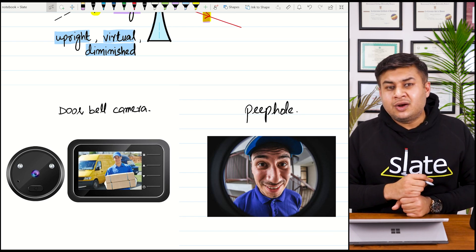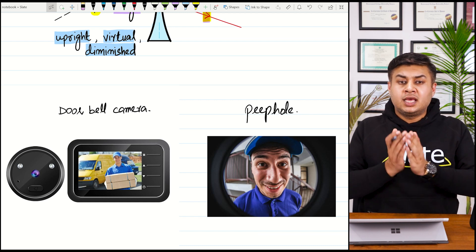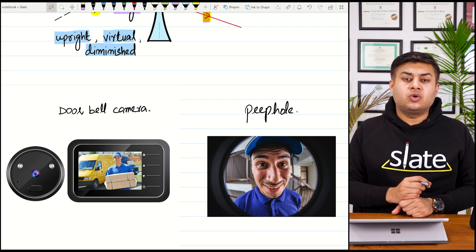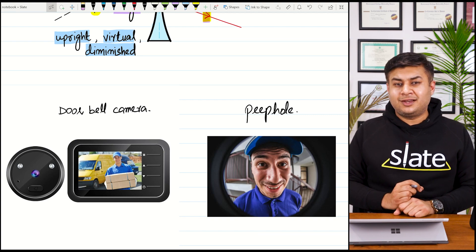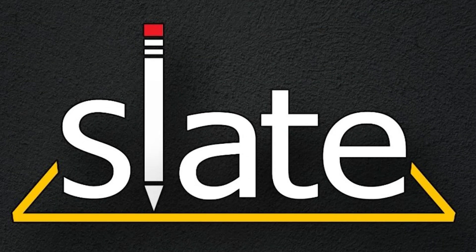So in the next class, we are going to study how the human eye forms the image on the retina and defects in the eye, including short-sightedness and long-sightedness. For that video, stay tuned. Thank you.